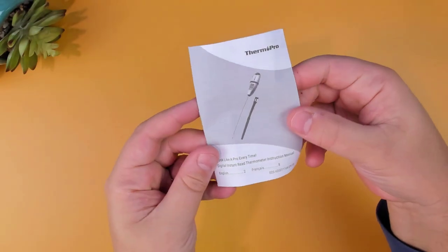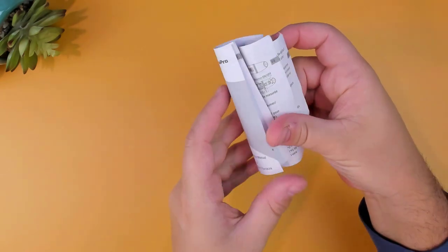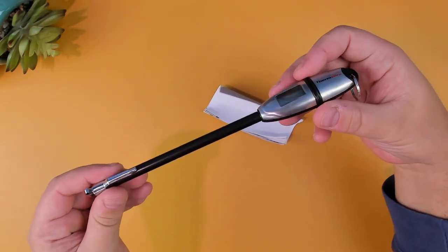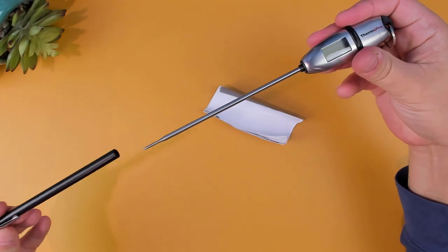In the box, it comes with a user manual, the thermometer, and a cover to keep the probe free from damage when not in use.